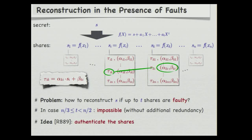You can think of this tag as a signature on the share S_I that can be verified by the key, except that this is an unconditionally secure signature. The tags are computed with a simple formula. If we work things out, we see that if we have this additional redundancy on the shares, then reconstruction of a shared secret in the presence of faults is possible.